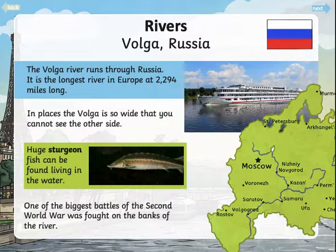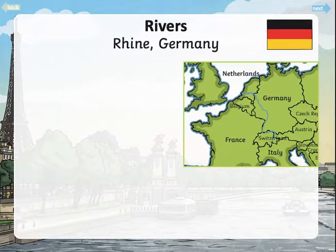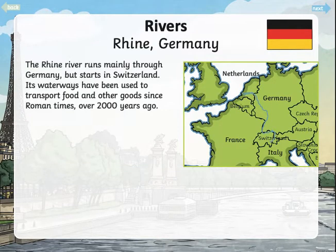That's a little bit about the River Volga in Russia, but you could choose a different river in Europe — it could be the River Thames, the Danube, or some of the rivers that flow through Venice. It's up to you. Here's another river: the River Rhine in Germany. The Rhine River runs mainly through Germany but starts in Switzerland.